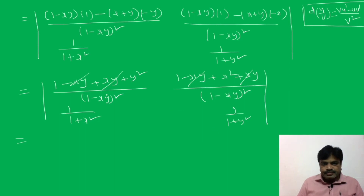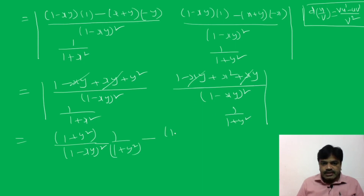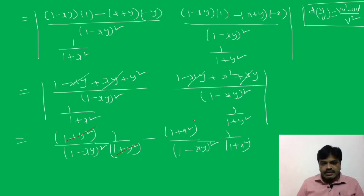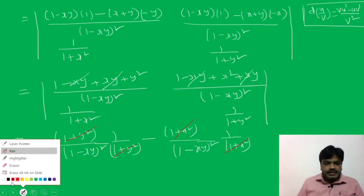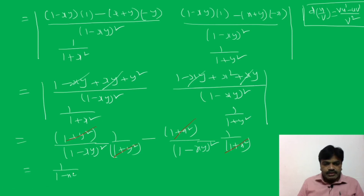Expanding the determinant: (1 + y²)/[(1 − xy)²] · 1/(1 + y²) minus (1 + x²)/[(1 − xy)²] · 1/(1 + x²). Observe that (1 + y²) cancels in the first term and (1 + x²) cancels in the second term. We get 1/(1 − xy)² minus 1/(1 − xy)². These two are also cancelled.